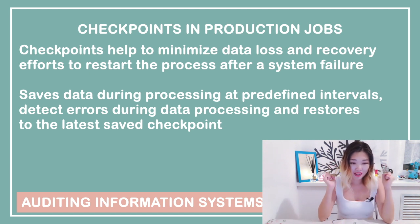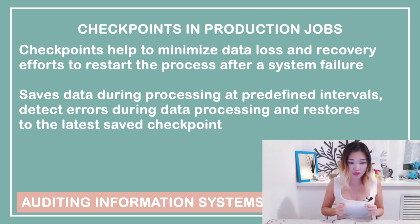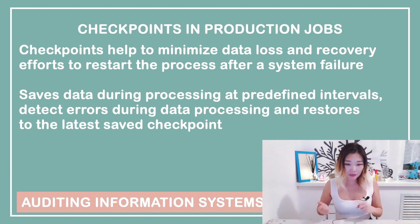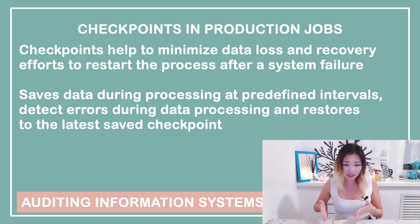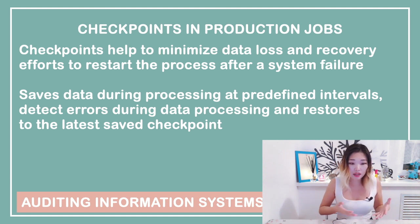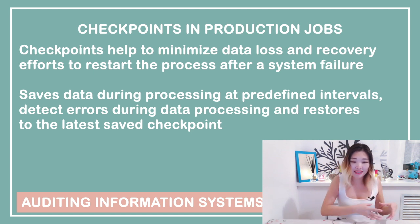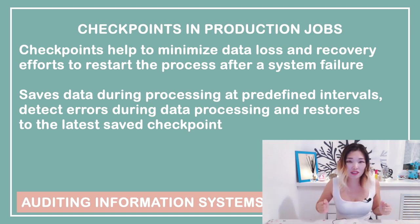Production checkpoints are a type of detective and partially corrective control that helps minimize the risk of data loss during data processing. If, for example, you are uploading some data into the database, checkpoints will back up the data at certain intervals. In case the upload fails or some error occurs, it can restart the process from the last saved point instead of starting from scratch.